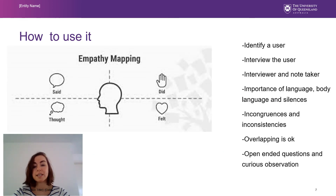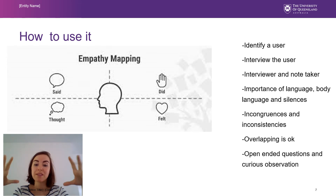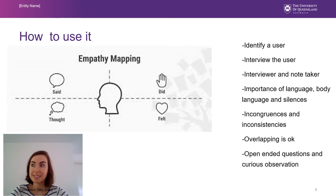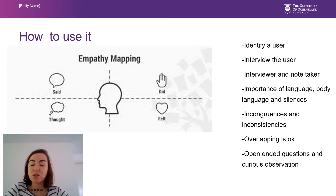So how do you use it? The empathy map is a very simple tool that has four quadrants, and those quadrants reflect what the user does, feels, thinks, and says in relationship with your product. This is usually something you witness as a designer through an interview or just watching how your user interacts with your product or service.